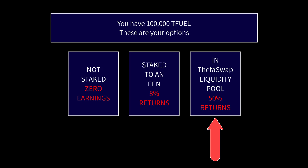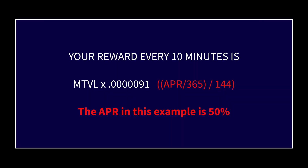The third option is to put it in the liquidity pool. In the liquidity pool you're going to earn 50% APR minimum, and it's liquid because you can take it out of the LP anytime with no delay and sell it if you want to capture and take profit.